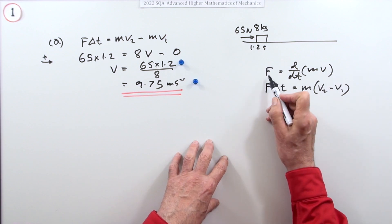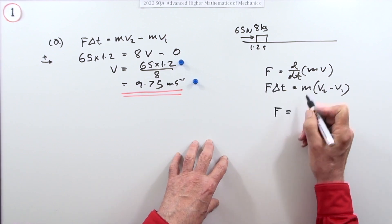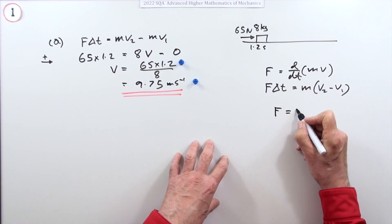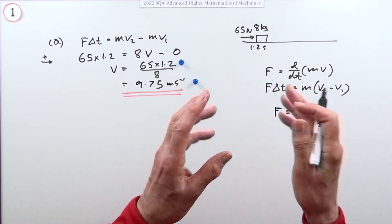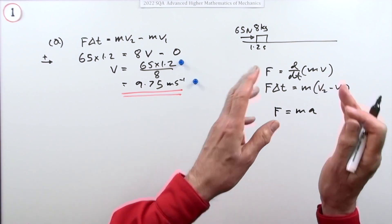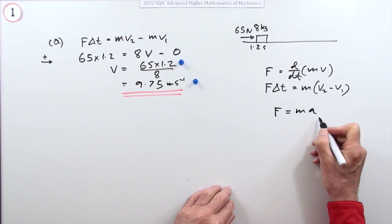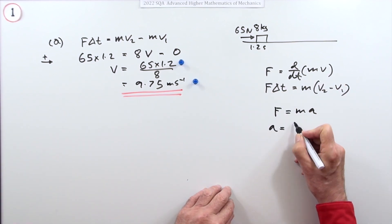Now you could have done it the other way. You could have said F equals ma, just going straight in with F equals ma. You get the acceleration, and from the acceleration and the time you can get the final velocity. So just rearrange it, a equals F over m, 65 over 8.